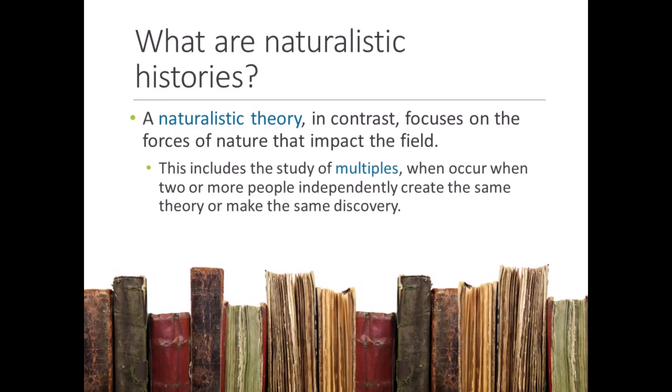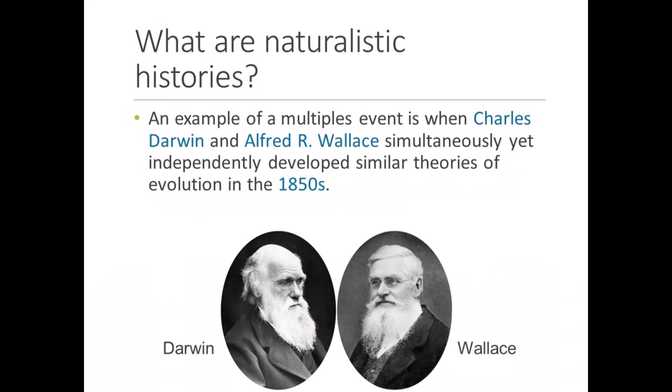But people are not the only forces of change. A naturalistic history examines the broader forces of history — the naturally occurring events that played a significant role in shaping the past. For example, Edwin Boring pointed to the occurrence of multiples, or multiple independent events, which happen when two or more people independently create the same theory or make the same discovery. Through a naturalistic approach, historians learned that the world-famous Charles Darwin and the relatively unknown Alfred Wallace simultaneously yet independently developed nearly the same theory of evolution in the mid-1800s. Eventually, Wallace sent a letter to Darwin describing his ideas. Upon reading the letter, Darwin realized he had competition and worked quickly to publish the book he had been working on for nearly 20 years, before Wallace got credit for the theory.